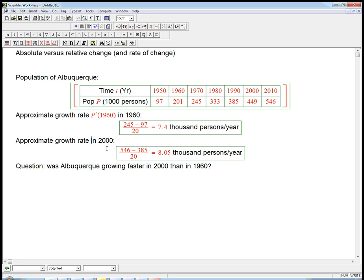Our best approximation to p prime of 2000 is this bracketing: 546 minus 385 over 20, that's 8.05 thousand persons per year. And the question is, was Albuquerque growing faster in 2000 than in 1960?